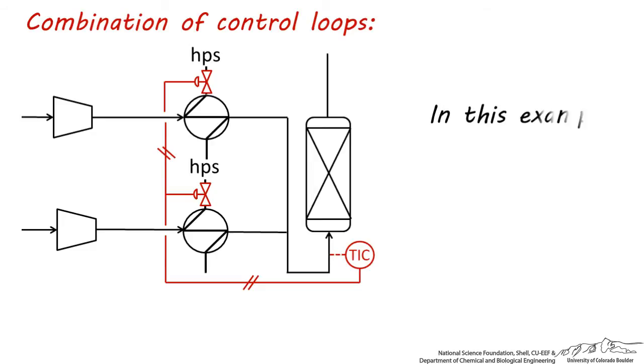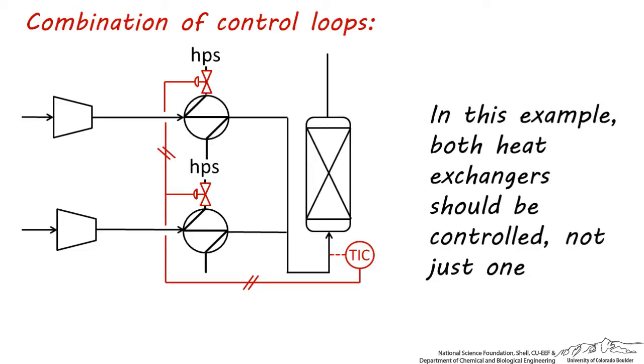As you might expect, the high-pressure steam going to both of these heat exchangers should be controlled, and not just one. This is because these streams mix before the reactor, and there shouldn't be a large temperature discrepancy between them. So this is a suitable control system for the inlet temperature going to R101.